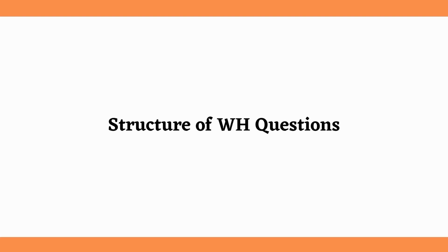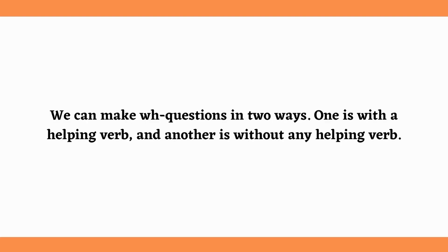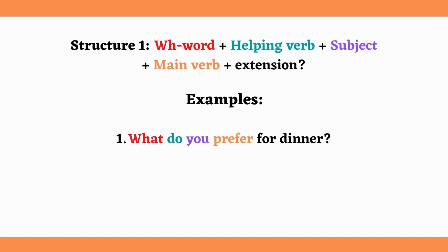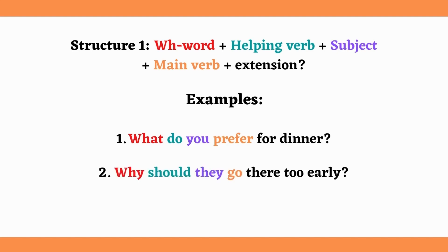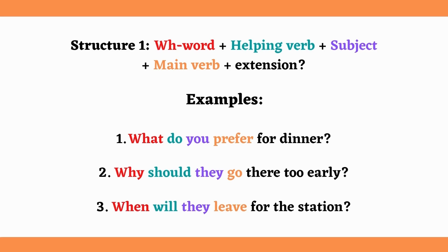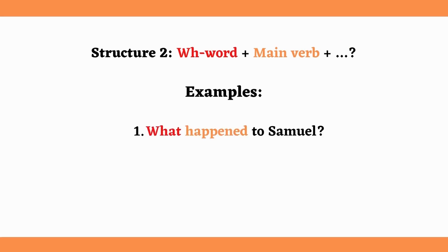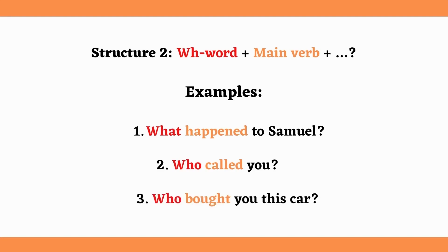Now let's see the structures of WH questions with examples. We can make WH questions in two ways. One is with a helping verb, and another is without any helping verb. The first structure is: WH word + helping verb + subject + main verb + extension. For example: What do you prefer for dinner? Why should they go there too early? When will they leave for the station? The other structure is: WH word + main verb + extension. For example: What happened to Samuel? Who called you? Who bought you this car?